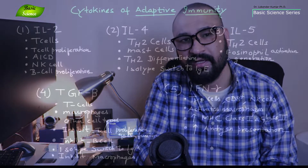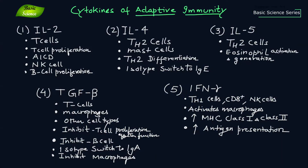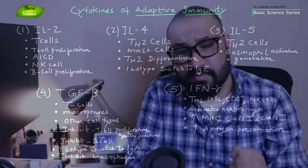In this video, we'll discuss the role of cytokines involved in the adaptive immune system. We'll discuss the role of interleukin-2, interleukin-4, interleukin-5, TGF-beta, and interferon-gamma. These are the most important cytokines of the adaptive immune system. We're going to discuss what are the important cell types involved in the production of these cytokines and their functions.